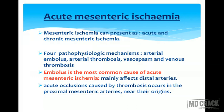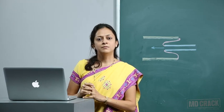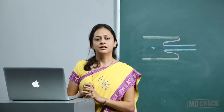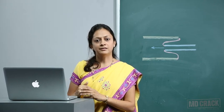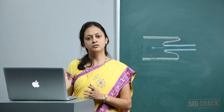Acute occlusion caused by thrombosis occurs in the proximal mesenteric arteries near their origin. Sources for embolus of the superior mesenteric artery include left atrial fibrillation, mural myocardial infarction, atheromatous plaques from aortic aneurysm, and mitral valve vegetation associated with endocarditis. A common exam question asks which condition is not a causative factor — exclude accordingly.